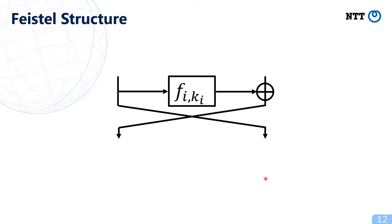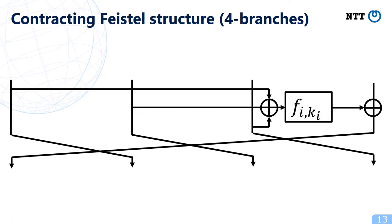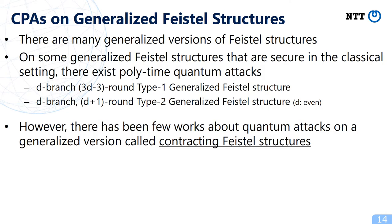Recall that a single round transformation of Feistel structures has two branches. A single round transformation of contracting Feistel structures has many branches — this picture illustrates the case of four branches. First, the sum is taken over all branches except the rightmost branch, and this sum becomes the input to the round function. The output of the round function is XORed with the rightmost branch, and then the branches are rotated.